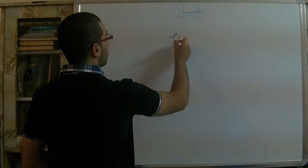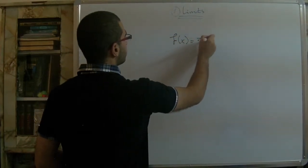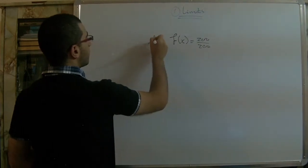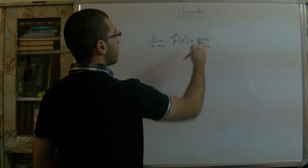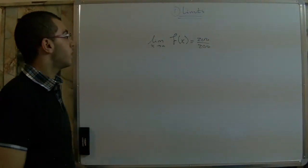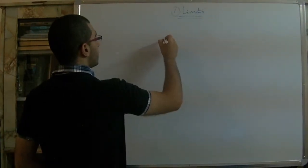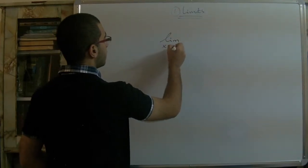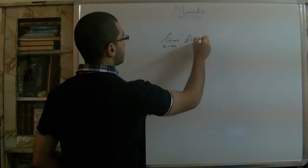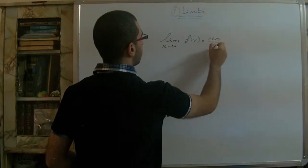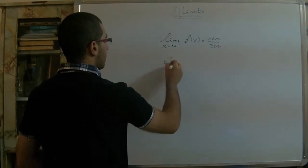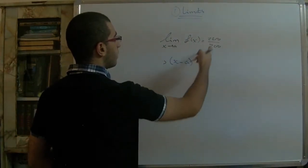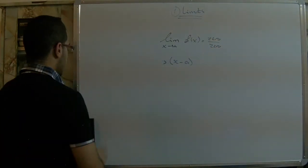Today we will say it another way. If we have the limit as x approaches a and substituting gives 0 over 0, then (x − a) is a factor of both the numerator and the denominator.